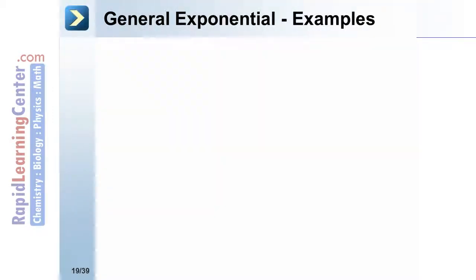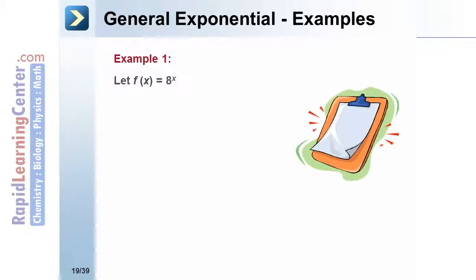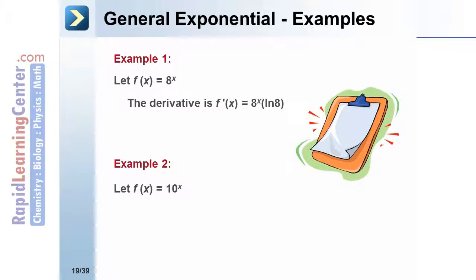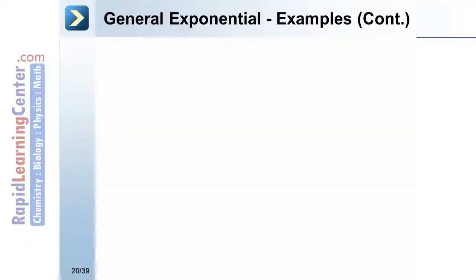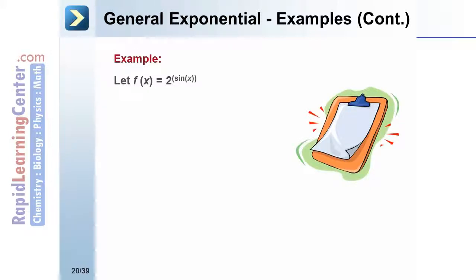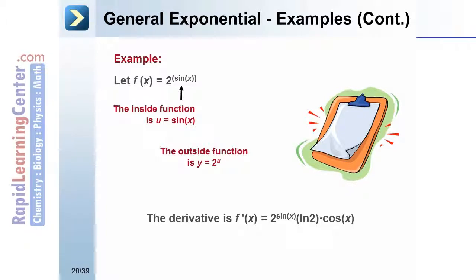Let's look at some general exponential examples. If f of x equals 8 raised to the x power, the derivative is 8 to the x times the natural log of 8. If f of x equals 10 to the x power, the derivative is 10 to the x times the natural log of 10. For f of x equals 2 raised to the sine of x power, the inside function is sine of x and the outside function is 2 raised to the u. Using the chain rule, the derivative is 2 raised to the sine of x power times the natural log of 2 times the cosine of x.